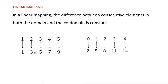Let's look at another example. You can see that the difference between zero and one is one, the difference between one and two is one, and it continues — it's going to be one for all of them. The difference between two and five is three, the difference between five and eight is three, and it's also going to be the same for all of them. So we see that this is another example of a linear mapping.